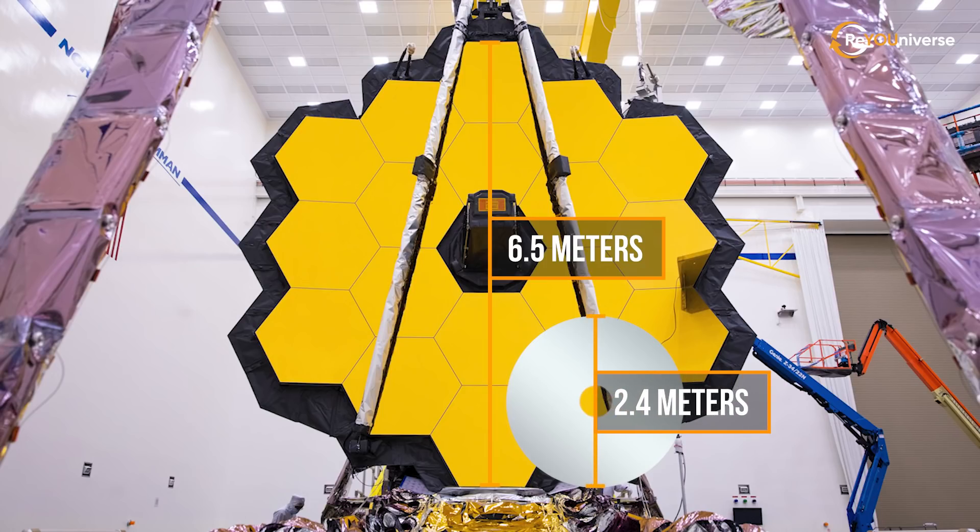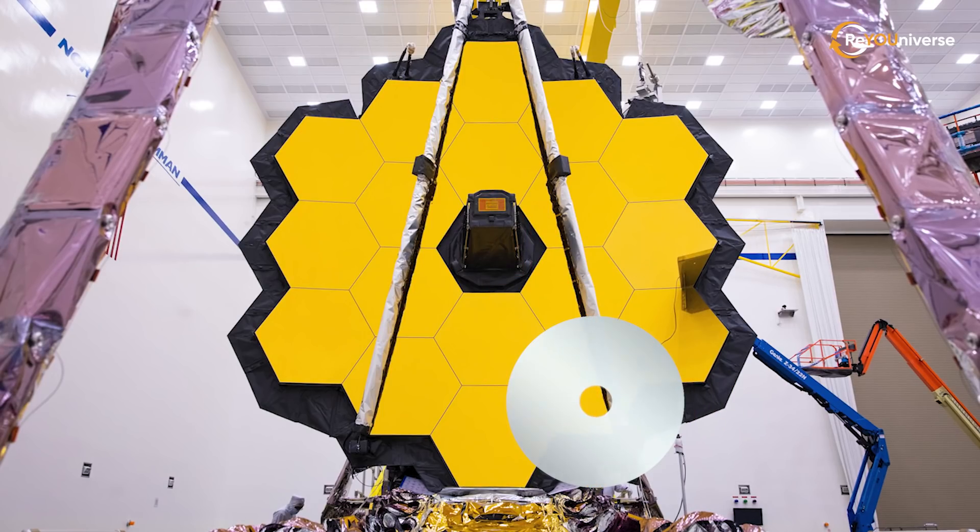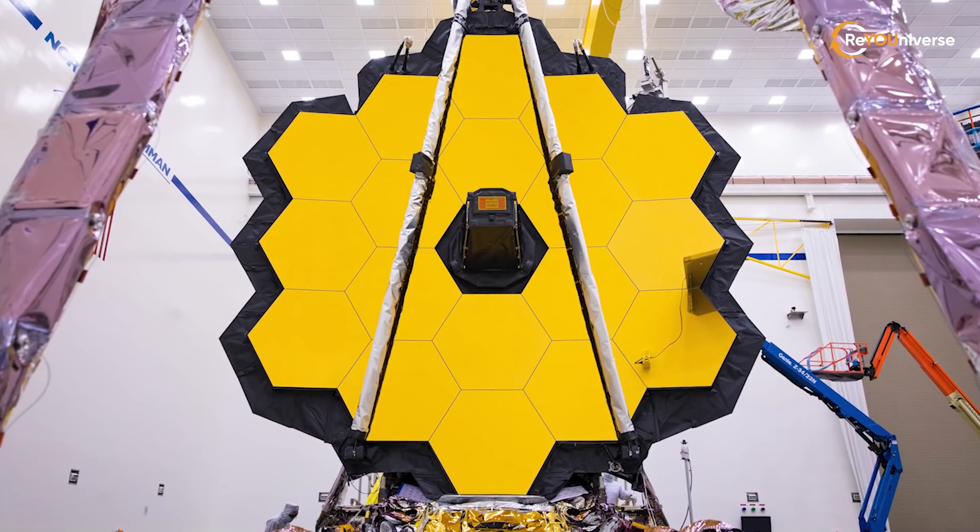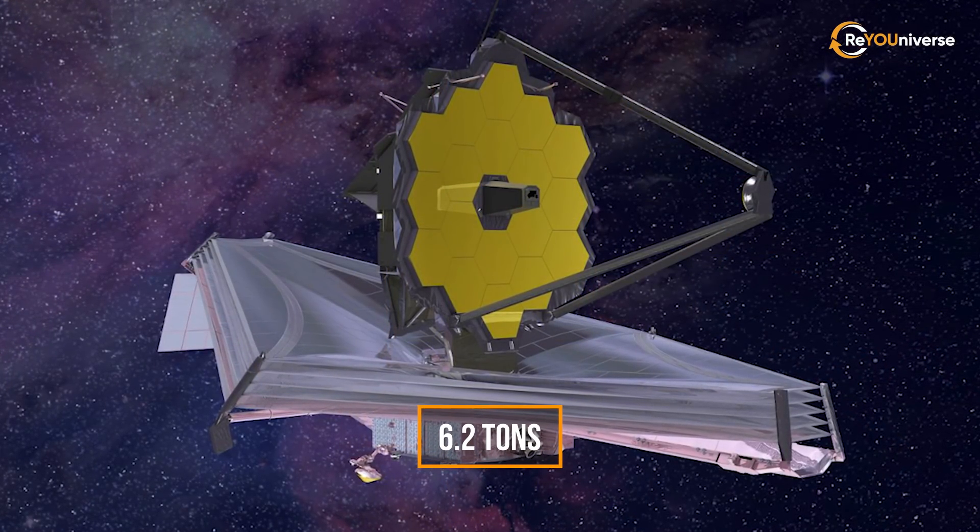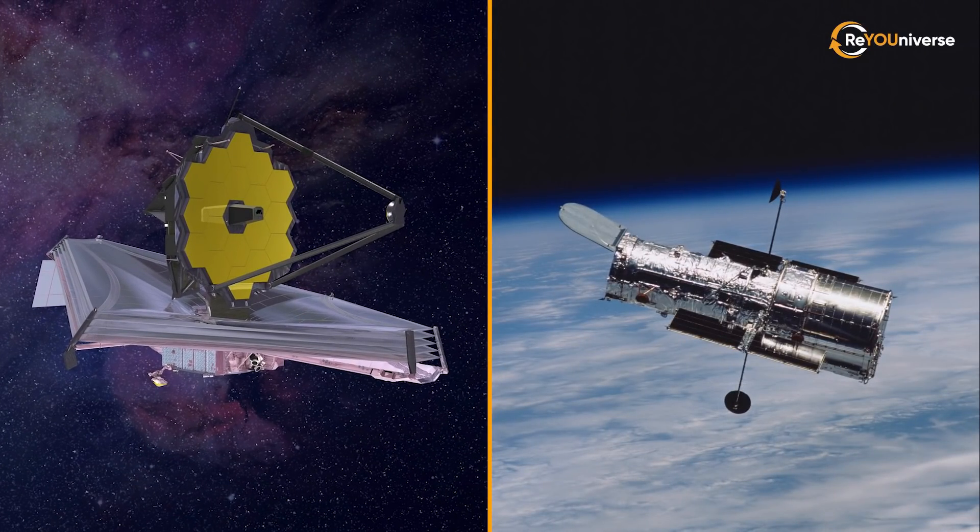In terms of weight, Webb also significantly outperforms Hubble, but the other way around. The Webb telescope weighs 6.2 tons. That's a lot, but the much smaller Hubble weighs a whopping 11 tons.